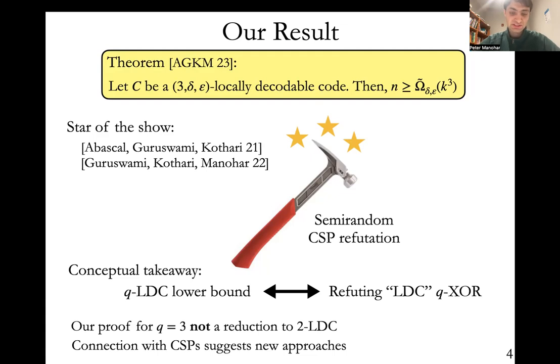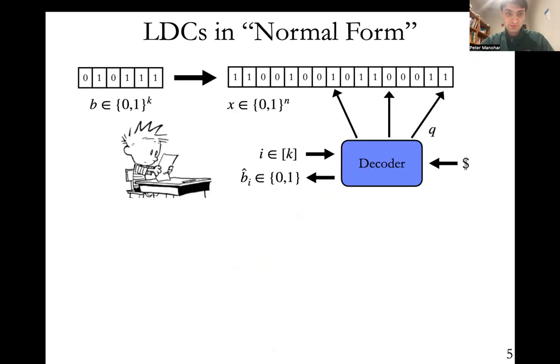The cool thing about our proof is unlike prior work, our proof is not a reduction to a two-query locally decodable code. We instead reduce to this XOR problem and refute the XOR instance. This connection to CSP suggests perhaps new approaches to proving LDC lower bounds that might allow us to go beyond k cubed or even get superpolynomial lower bounds. Before I can explain this connection between q-LDC lower bounds and XOR refutation, I first have to explain the starting point of all LDC lower bounds. If you recall this picture for locally decodable codes, what's going on here, we have this decoder. When it tosses these coins to determine which elements to query, the query sets can really be arbitrary. We don't have any control over what the decoder is doing.